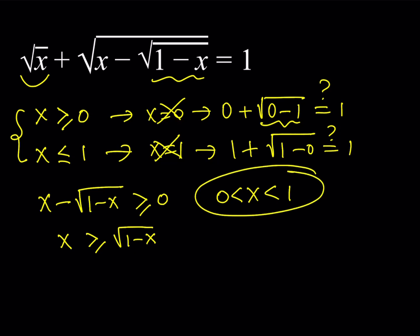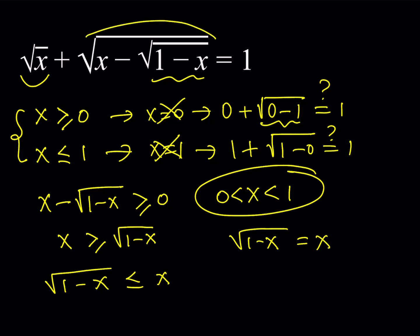We have more information than that. This tells us that square root of 1 minus x is less than or equal to x. But can square root of 1 minus x equal x? If so, that expression would be 0, but it's impossible because x cannot equal 1. So this won't work either, which means the correct inequality is the strict one: square root of 1 minus x is strictly less than x.